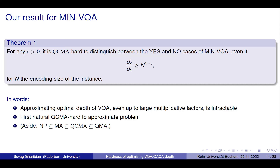Why QCMA-hard-to-approximate? Because of the gap. Even if you could solve this when the gaps are so far apart, you could solve any QCMA problem. It's trivially complete in QCMA, because it's easy to solve this problem in QCMA — you just send me the rotation angles, and then I run the circuit myself as a quantum computer.